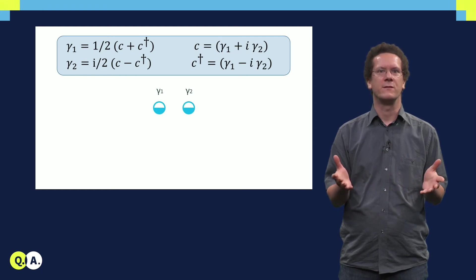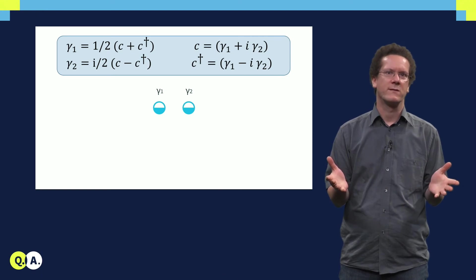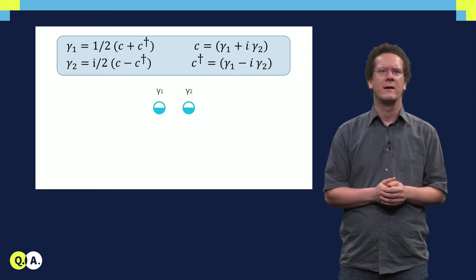It is very easy to see, I urge you to do the mathematics yourself, that those operators are Majorana operators. Gamma 1 equals gamma 1 dagger, and gamma 2 equals gamma 2 dagger.